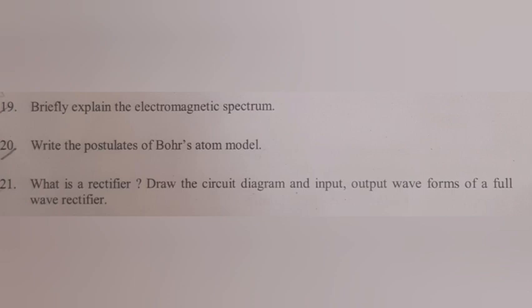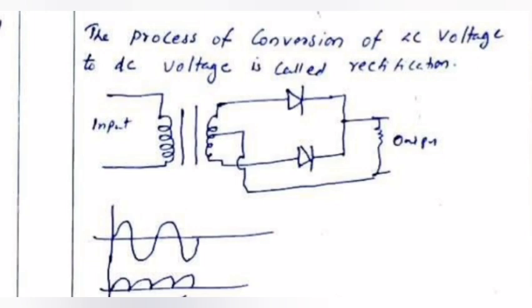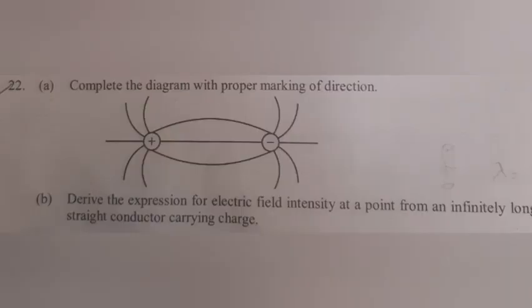Question 21: What is a rectifier? Draw the circuit diagram and input, output waveforms of a full-wave rectifier. Answer: The process of conversion of AC voltage to DC voltage is called rectification.